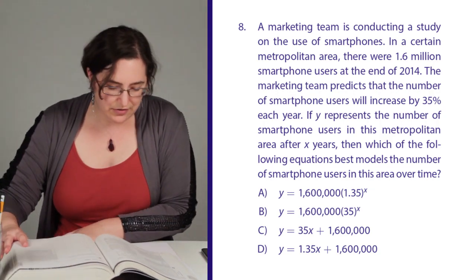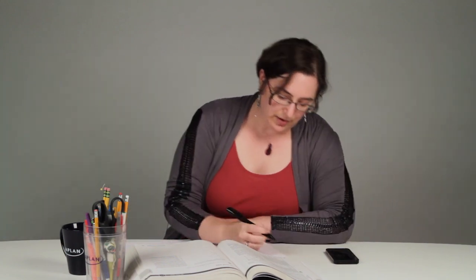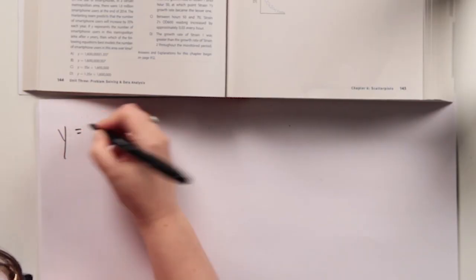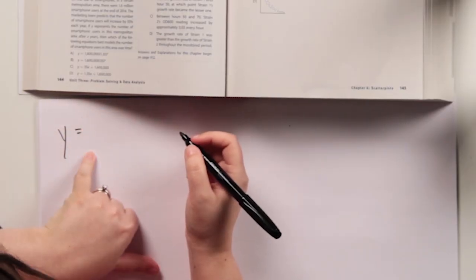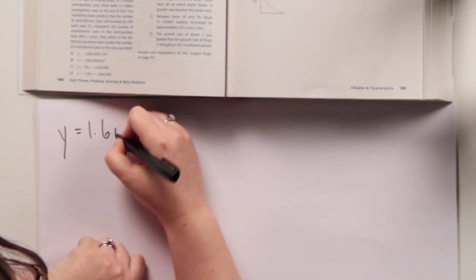Alright, so this is another one about the exponential growth form, because if it's growing by 35% every year, that's not linear. That's going to be increasing exponentially. So I'm looking for something Y equals the starting value, which is 1.6 million,